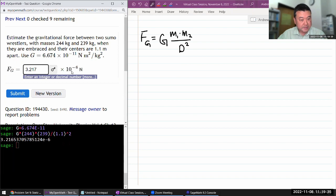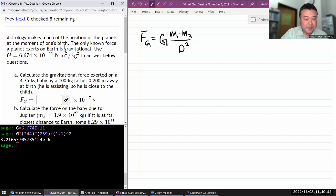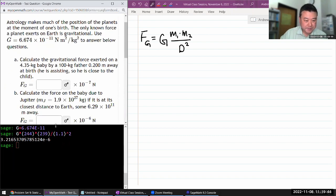10 to the power of minus 6 is already there, so I don't have to re-enter that. Yeah, good. Let me do the next question. I think it's a similar plugging in exercise.